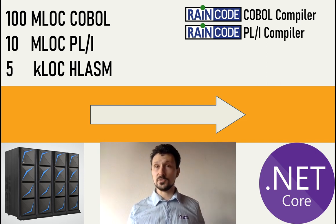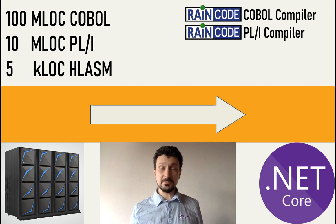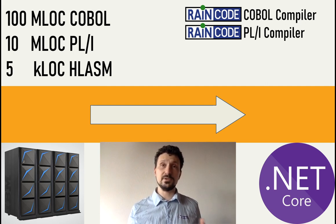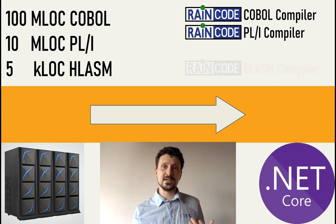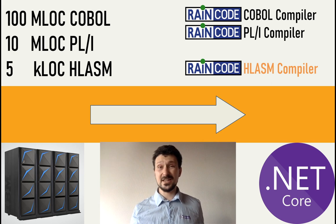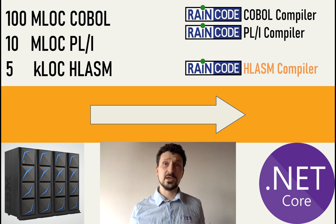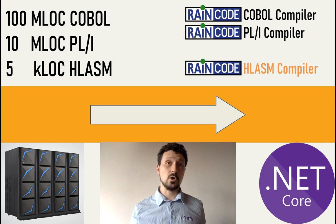And usually that would have been a showstopper. That Assembler needs to be transformed, or rewritten, or something needs to happen to it before we can migrate. That just adds another level of complexity into a migration, which is already a very complex process. So that's how we, several years ago, embarked on a journey to make an Assembler compiler.